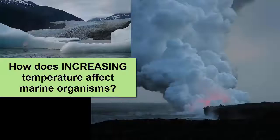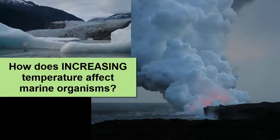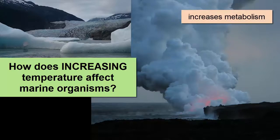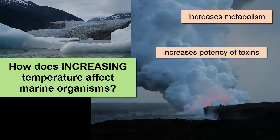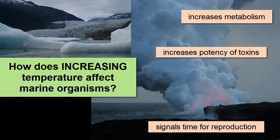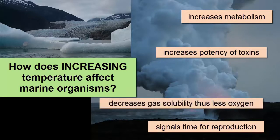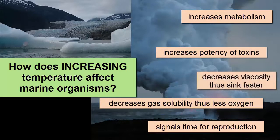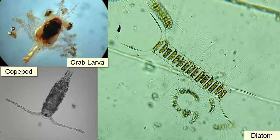Increasing temperatures can trigger more than just migration or death. Heat makes almost all chemical reactions happen faster, increases the toxicity of pollutants in the water, and can signal spawning. Increasing temperature decreases gas solubility, meaning there is less dissolved oxygen available for respiration. It also decreases viscosity, meaning plankton will have a harder time staying afloat and must find new ways to increase their surface area — such as growing new appendages, spines, or hairs, or forming chains together.